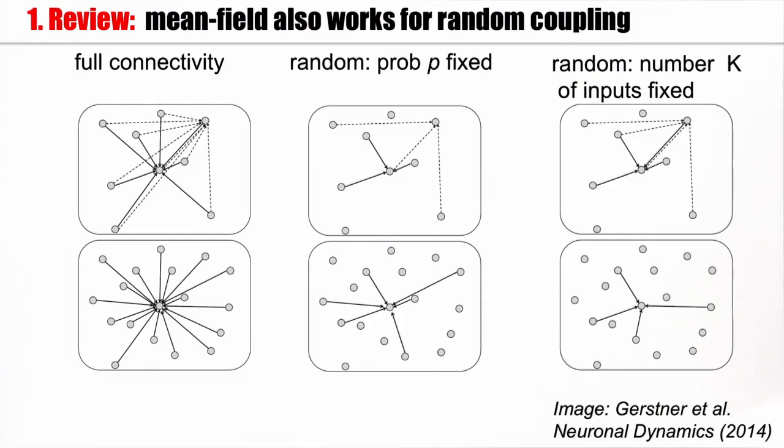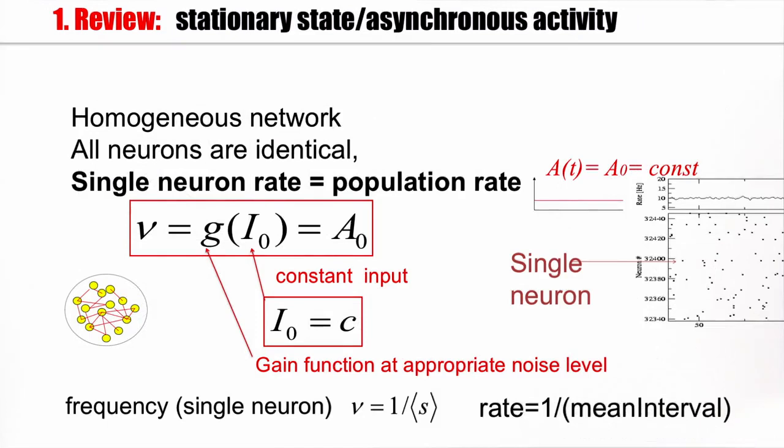Now, these mean field arguments work not just for full connectivity, but also for random connectivity. There are two versions. For instance, you can keep the probability of connection p fixed, like 15%, or you can say the number k of inputs per neuron is fixed, and this number stays the same if I increase the size of the network. In both cases, it's called random connectivity.